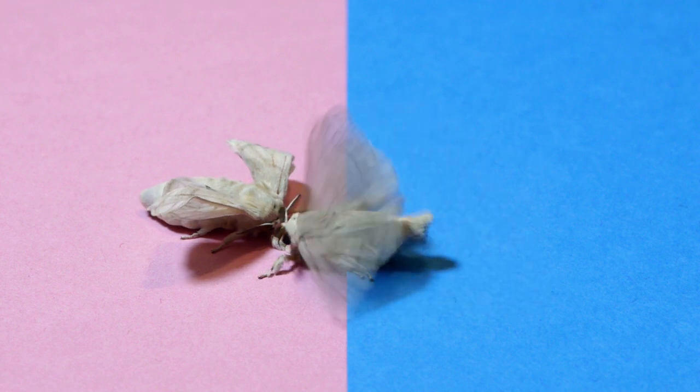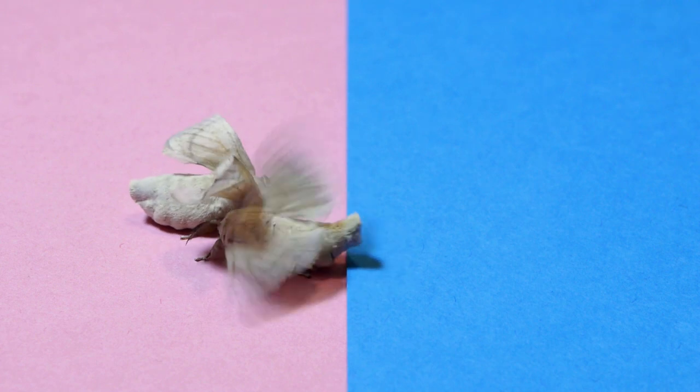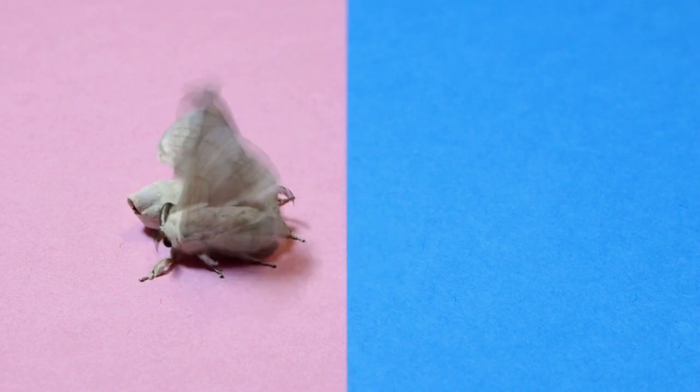After locating the female, the male moth will curl his abdomen and attempt to copulate with the female.